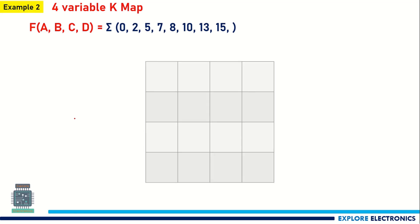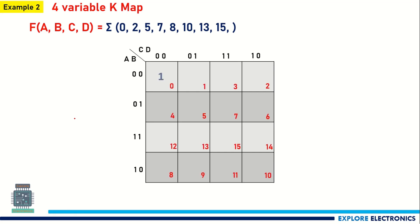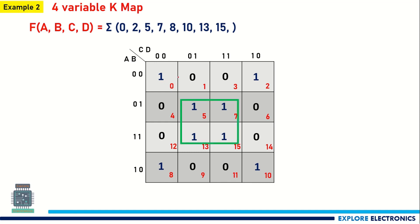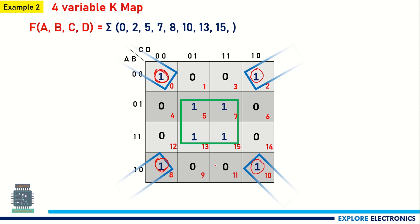In the second example we have different minterms. Let me fill those values: 0, 2, 5, 7, 8, 10, 13, 15 — remaining cells filled with 0. In the center we have four adjacent ones, so we create that group first. All four corners also have ones; since corners are adjacent to each other, we can form a four-cell corner group.